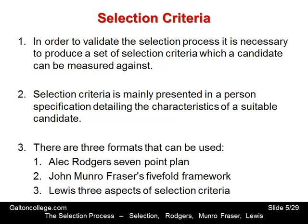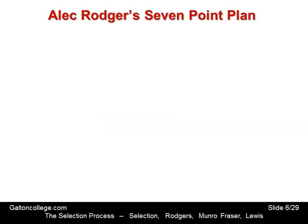The company should try to explain that so that applicants know what they're looking for. There are three formats that can be used: Alec Rogers' seven-point plan, John Munro Fraser's five-fold framework, and Lewis's three aspects of selection criteria. They're very straightforward, quite simple ideas, but we'll run through them for completeness. We'll start with the Alec Rogers seven-point plan.